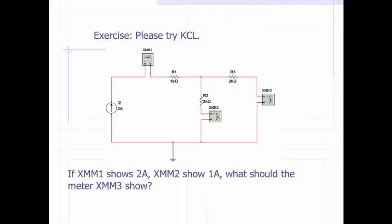Now let's see this exercise. Please try to use KCL to solve the problem. Suppose there's a circuit like this, and I put three current meters here. The first meter shows two amperes, the second meter shows one ampere, and what should be the reading on the third meter?